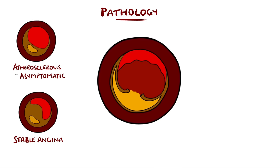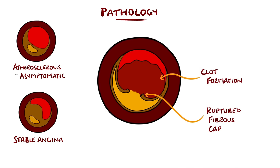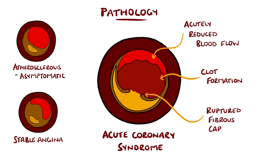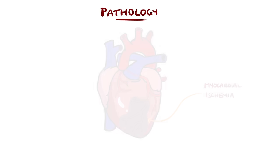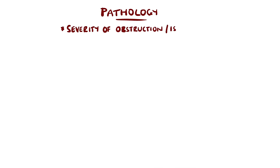However, in acute coronary syndrome, these plaques rupture. The thrombogenic material is then exposed to blood, leading to formation of a clot, which causes a very sudden reduction in blood flow to the cardiac cells, and therefore ischemia. Depending on the severity of the reduction of flow, we can see the different spectrums of acute coronary syndrome.